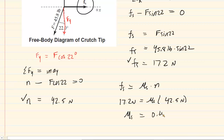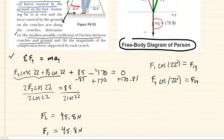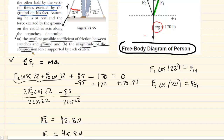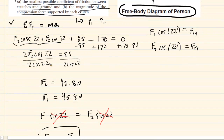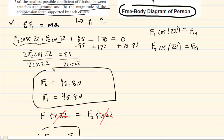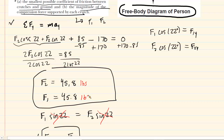That is the correct answer to Part A. For Part B — the magnitude of the compression force supported by each crutch — that was what we called F1 and F2, and we already found those values: 45.8 pounds each. I should note those should have been in pounds, not newtons as I said earlier — apologies for that confusion. Those are the correct answers for Part B.